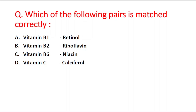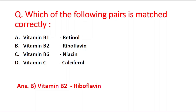The options are: vitamin B1 chemical name retinol; vitamin B2 chemical name riboflavin; vitamin B6 chemical name niacin; and vitamin C chemical name calciferol. The right answer is option B — vitamin B2, chemical name riboflavin. Note: vitamin B1 is thiamine, vitamin B6 is pyridoxin, niacin is the chemical name of B3, vitamin C is ascorbic acid, calciferol is vitamin D, and retinol is vitamin A.